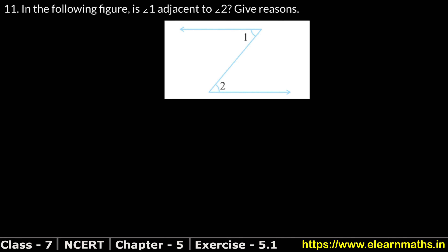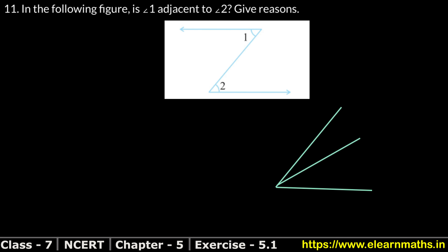Let's do question number 11. Question number 11 asks: in the following figure, is angle 1 adjacent to angle 2? Give a reason. I have told you that adjacent angles are those which have a common arm. So we check whether angle 1 and angle 2 have a common arm.